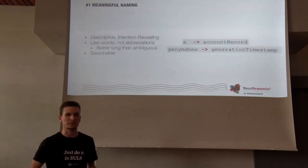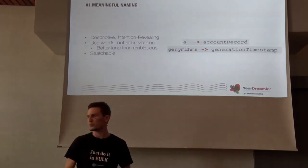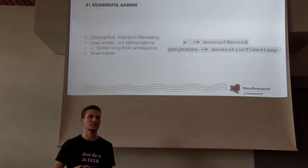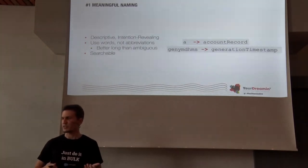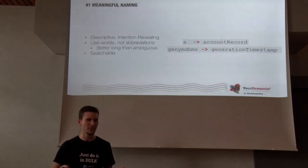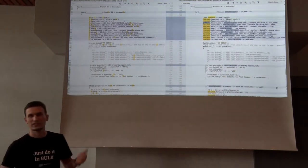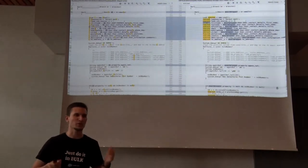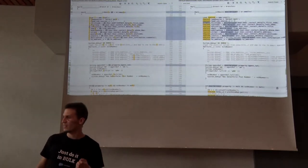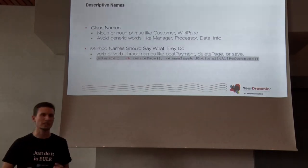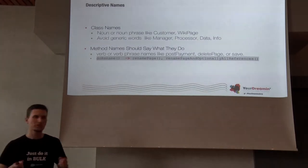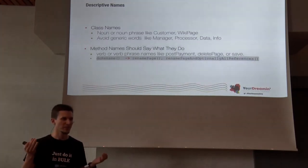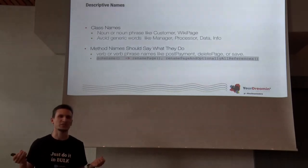Meaningful naming is the first principle — one of those small things we are looking to improve. A meaningful name is the one that describes the intention of a variable, class, or method. It's not a single letter, not an abbreviation, and it's easy to search. If you search for 'L' you find a bunch of Ls; if you search for 'new lead', you know exactly how often we work with new leads. Class names should be nouns or noun phrases like 'Customer' or 'WikiPage', and it's better to avoid generic words like 'Manager' or 'Processor', because a class can easily become a magnet for unrelated things.